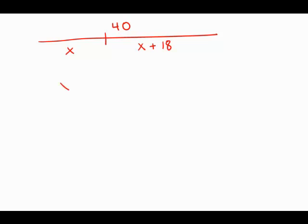Well, from this diagram, it's pretty clear that x plus x plus 18, that if we add up those two lengths together, we'll get the length of the whole rope 40. So the magic of algebra, 2x plus 18 equals 40.